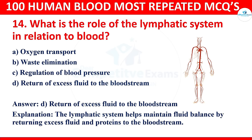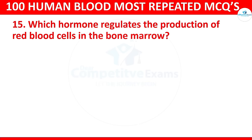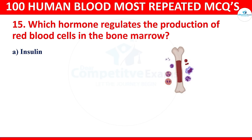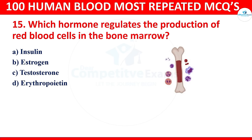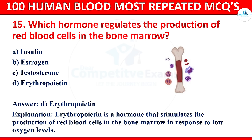Question 15: Which hormone regulates the production of red blood cells in the bone marrow? Options: insulin, estrogen, testosterone, or erythropoietin. The correct answer is erythropoietin. It is a hormone that stimulates the production of red blood cells in the bone marrow in response to low oxygen levels.